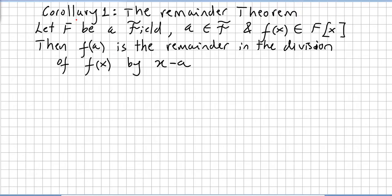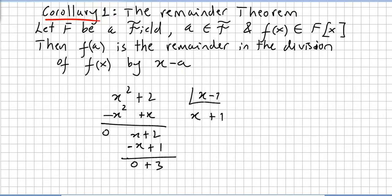Now I want to quickly go through 3 corollaries. This will be corollary number 1. I'll do this quickly because people following a group theory course are used to this stuff in algebra. The remainder theorem: let F be a field, a an element in the field, and f(x) a polynomial in the field of polynomials. Then f(a) is the remainder in the division of f(x) by x minus a. Imagine you want to divide x squared plus 2 by x minus 1.